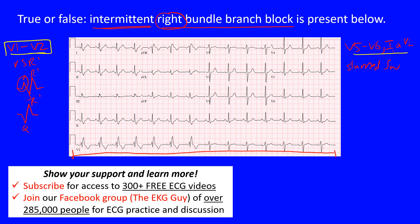Looking at our 12-lead, in V1 and V2 we have R and S waves - no RSR prime or rabbit ears. In V5 and V6 you can see slurred S waves, though they're not as prominent there. They're more prevalent in Lead 1 and AVL, where you notice this widening of the S waves. The reason we may not see it in V6 could be lead placement, since Lead 1 and V6 should normally be quite similar - so something is going on here.